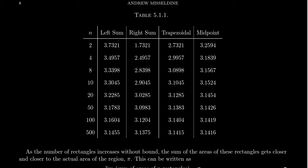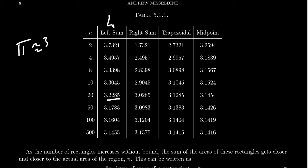Looking at the data for the left sum LN: L2 ≈ 3.7321, L4 ≈ 3.4957, L10 ≈ 3.3045, L20 ≈ 3.22, L50 ≈ 3.17, L100 ≈ 3.16, L500 ≈ 3.1455. That's starting to look a lot like π ≈ 3.14159. It takes about 500 rectangles before the left rule is accurate to two decimal places.